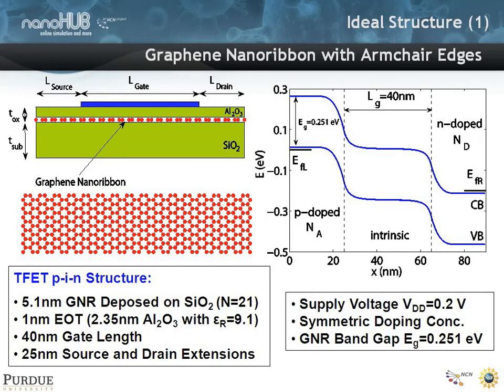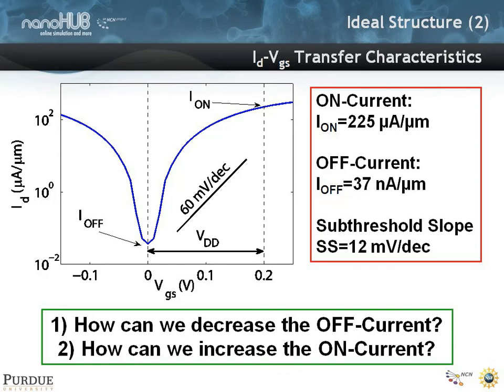Here is an electrostatic potential profile on the top right, where you see under a gated potential we have shifted the gate region down, and there's a finite bias applied between source and drain. If we take this device and calculate an ideal characteristic, we get an Ion of 225 microamps per micrometer, an off-current of 37 nanoamps per micrometer, and a sub-threshold slope of 12 millivolts per decade — significantly steeper than the ideal MOSFET value of 60 millivolts per decade.